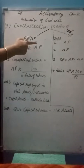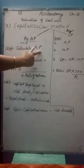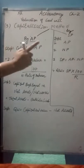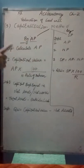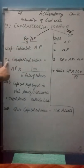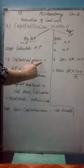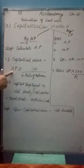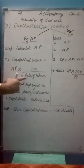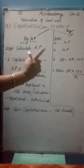Under the Average Profit Method, Step 1: calculate average profit. Average profit equals sum of the profits upon number of years. Step 2: assess capitalized value. Capitalized value equals average profit into 100 upon normal rate of return.